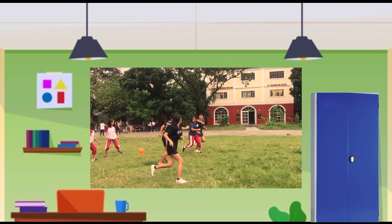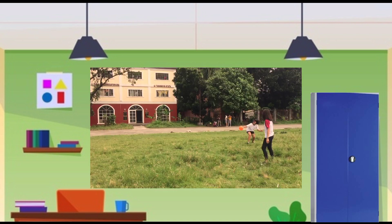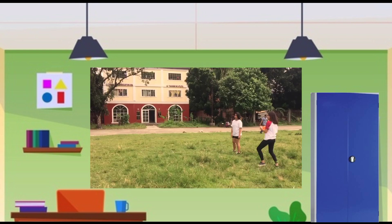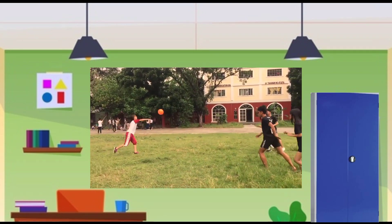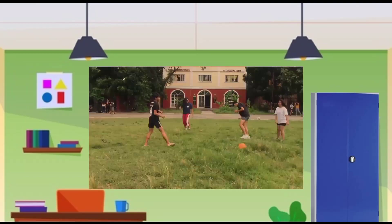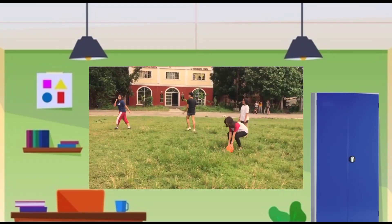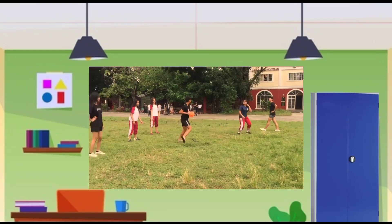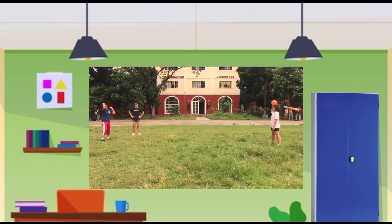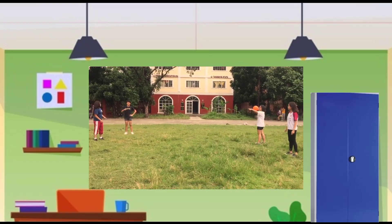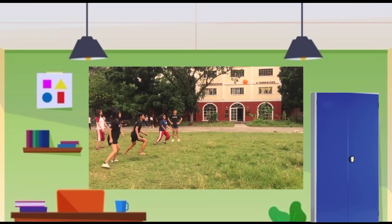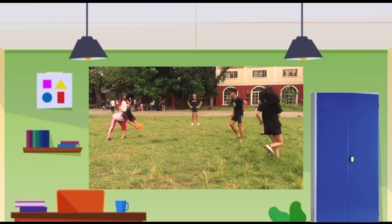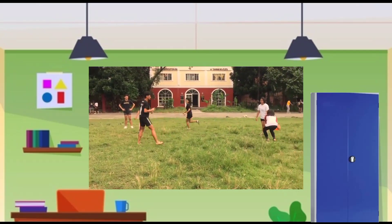Puesto ang unang team sa gitna ng playing area. Samantalang, ang kabilang team naman ay maahati sa dalawa at pupuesto sa magkabilang gilid. Susubukan nilang patamaan ng bola ang players ng unang team. Kapag nasalo naman ng isang player ng black team ang bola, maaari siyang bumuhay ng isang miyembrong na out na. Huwag nating kalimutang i-record gamit ang stopwatch kung gaano katagal bago ma-out ang lahat ng players ng isang grupo.